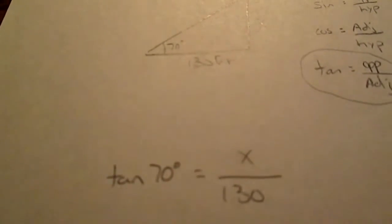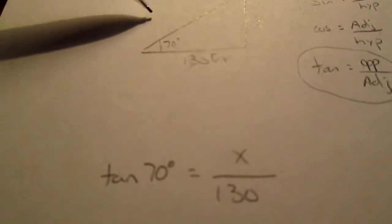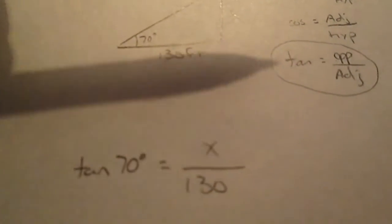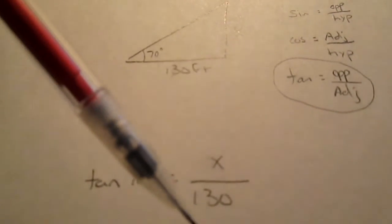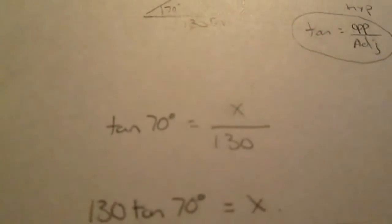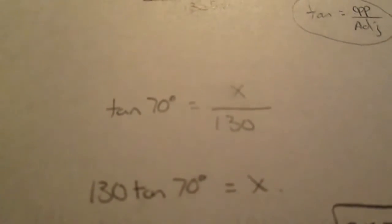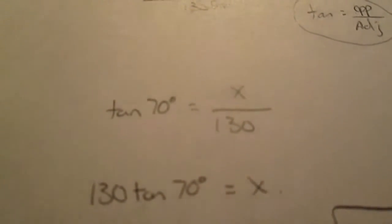And then what you're actually doing is just solving for that. You have tan, which is the 70 degrees, equals x over 130. And you're solving for x. So it's 130 tan 70 equals x.